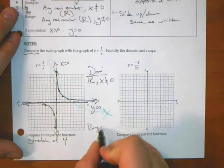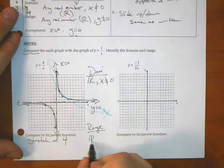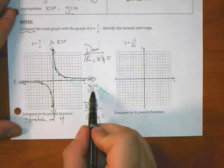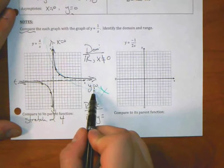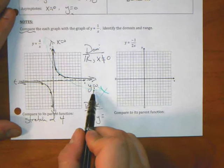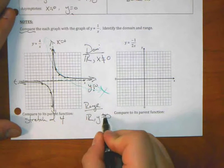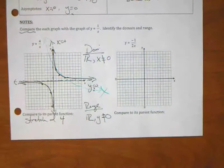Okay. It could be any real number, except for what x can we not put in? Zero. Zero. How about the range? Any real number. It could be any real number. And what y are you not allowed to plug in? Which y are you not allowed to plug in? Zero. The asymptote. The asymptote. So you're not allowed to plug in that asymptote.